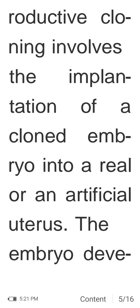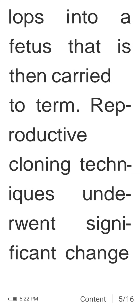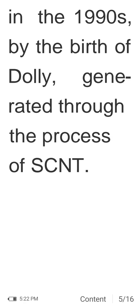Reproductive cloning involves the implantation of a cloned embryo into a real or an artificial uterus, where the embryo develops into a fetus carried to term. Reproductive cloning technique underwent significant change in the 1990s with the birth of Dolly, generated through the process of SCNT.